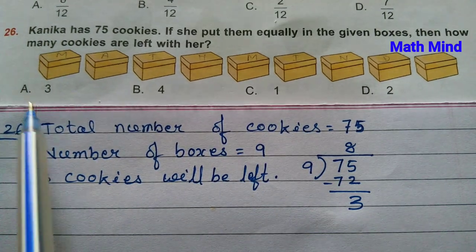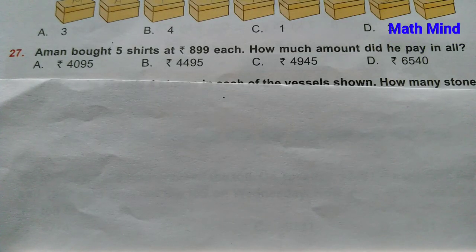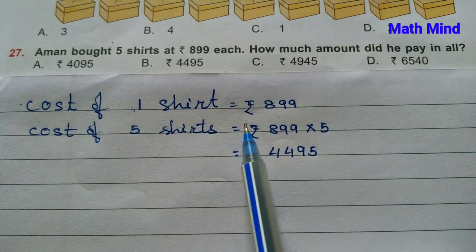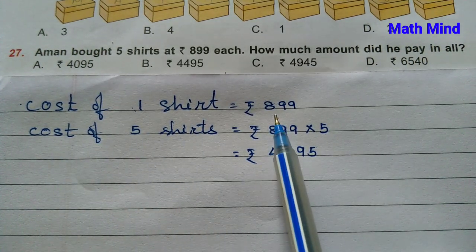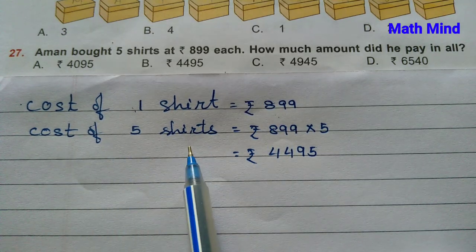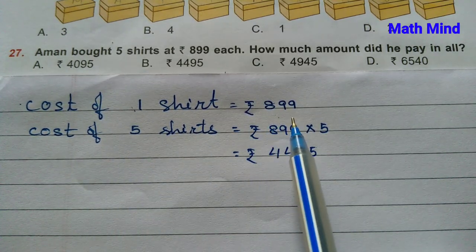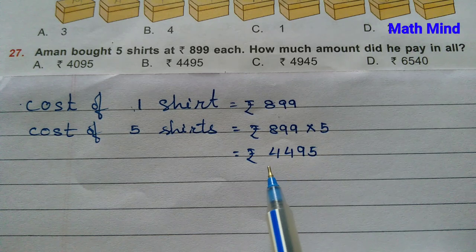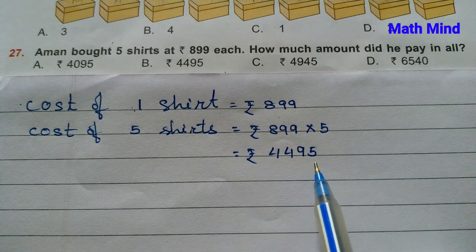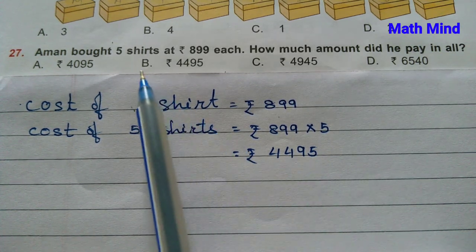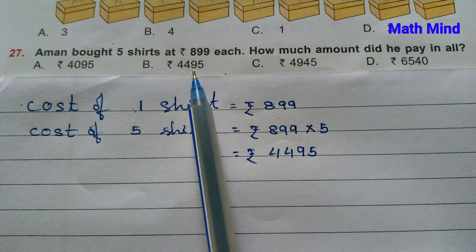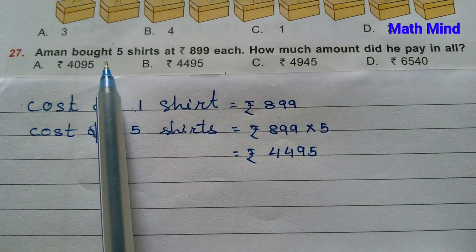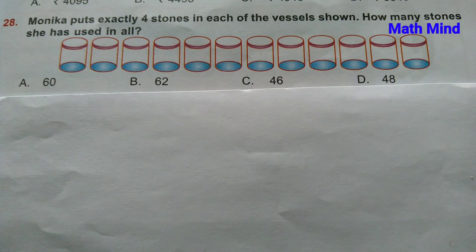Question number 27: Amun bought 5 shirts at 899 rupees each. How much did he pay in all? Cost of 1 shirt is 899 rupees; cost of 5 shirts equals 899 multiplied by 5, which gives 4,495 rupees. Option B is correct: 4,495 rupees.